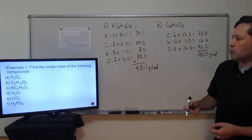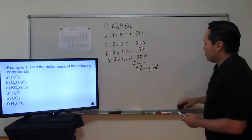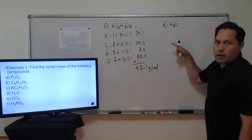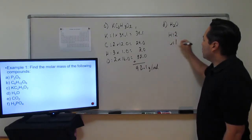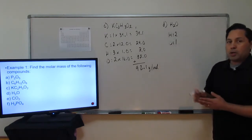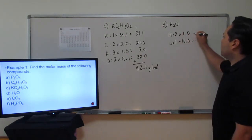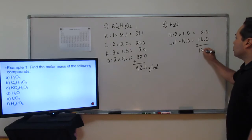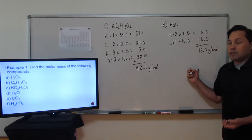Let's move along to letter D: H₂O, that's water. Count how many of each atom: two hydrogens and one oxygen. From the periodic table: hydrogen is 1, oxygen is 16. Multiply to get the products, and the grand total is 18 grams per mole. So one mole of water weighs 18 grams.